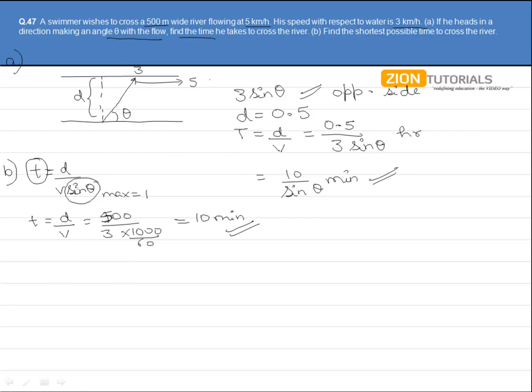Now, here we have taken sin theta equals to 1, which means that theta is actually 90 degrees, which further shows that this person should actually head perpendicular with respect to this velocity of the river in order to cross this river in the shortest possible time.